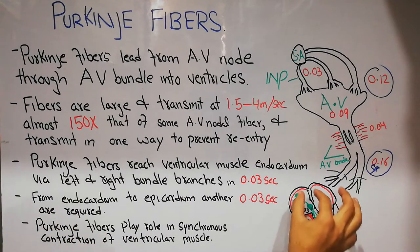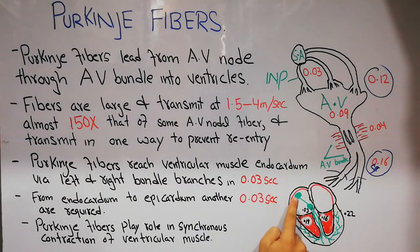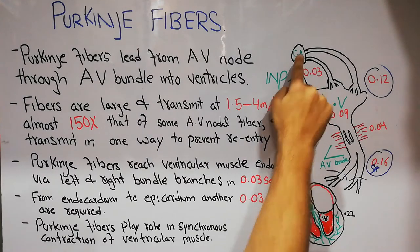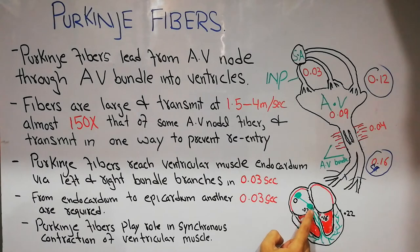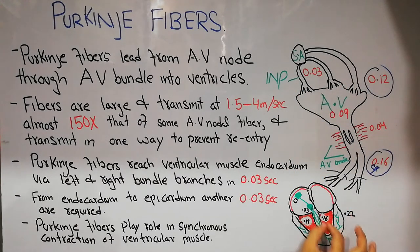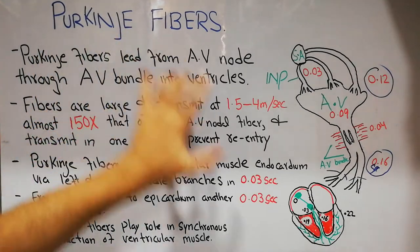Here is the heart: the right atrium, left atrium, right ventricle, and left ventricle. Here is the SA node, enlarged here. This is the internodal pathway, enlarged here. Here is the AV node, enlarged here, and these are the bundle branches present in the interventricular septum, taking the impulse from the AV node towards the ventricular muscle.